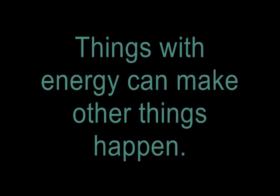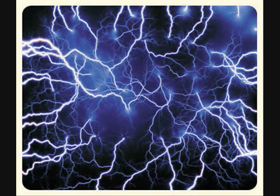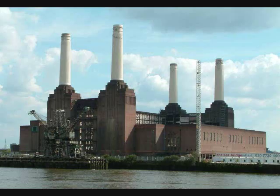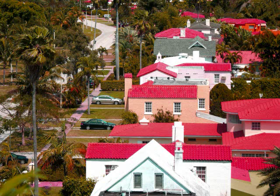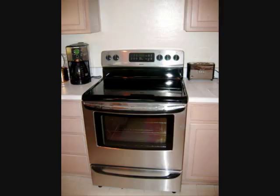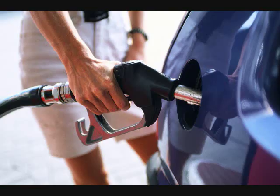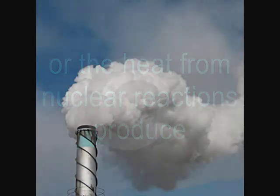Electricity can be used to transfer energy from one place to another. Things with energy can make other things happen. Electricity transfers energy from the power station to our house, where it is used to make objects work — it makes our hair dryers and stoves operate. Another example is when the burning of fossil fuels or the heat from nuclear reactions produce steam that powers a generator, which in turn creates electricity.